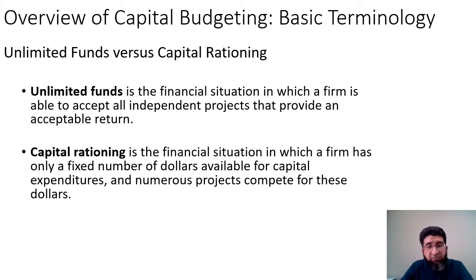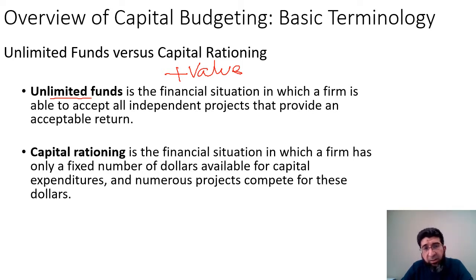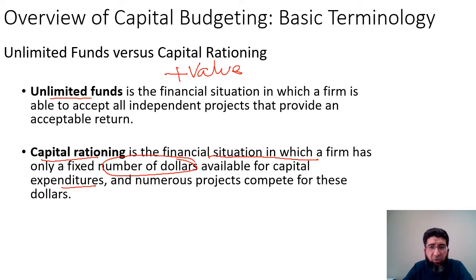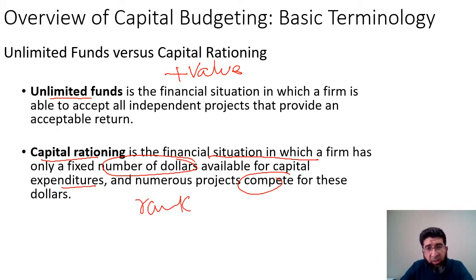This brings us to the funding scenario. If there are unlimited funds, all projects that create positive value for the firm should be accepted. However, in reality, firms do not have unlimited funds. Hence there is a concept of capital rationing — a financial situation in which a firm has only a fixed number of dollars available for capital expenditures and numerous projects compete for these dollars. We must have a criteria to rank projects and find which one brings more value.